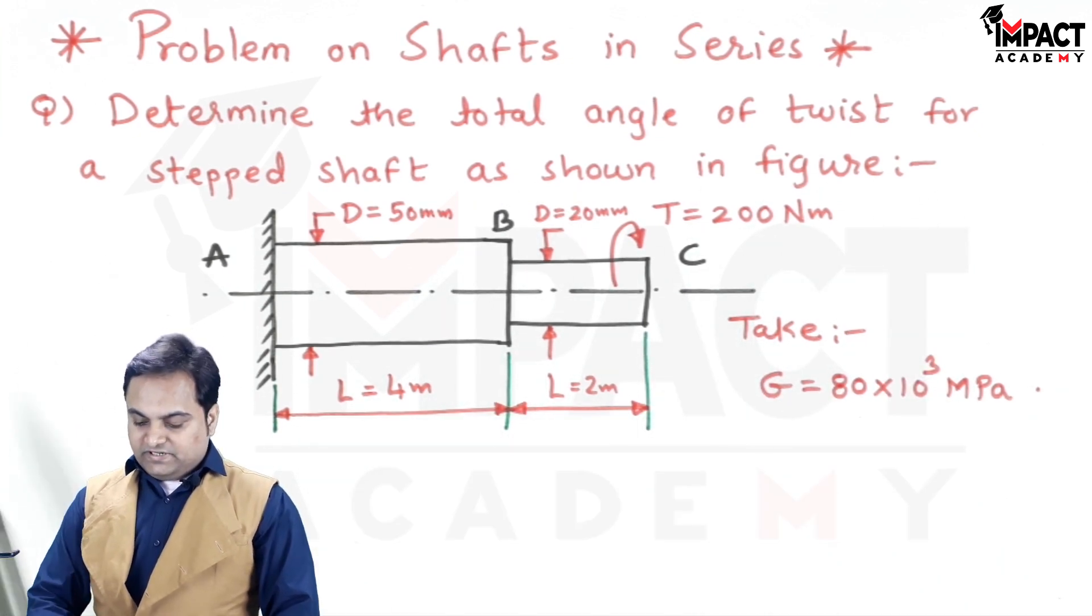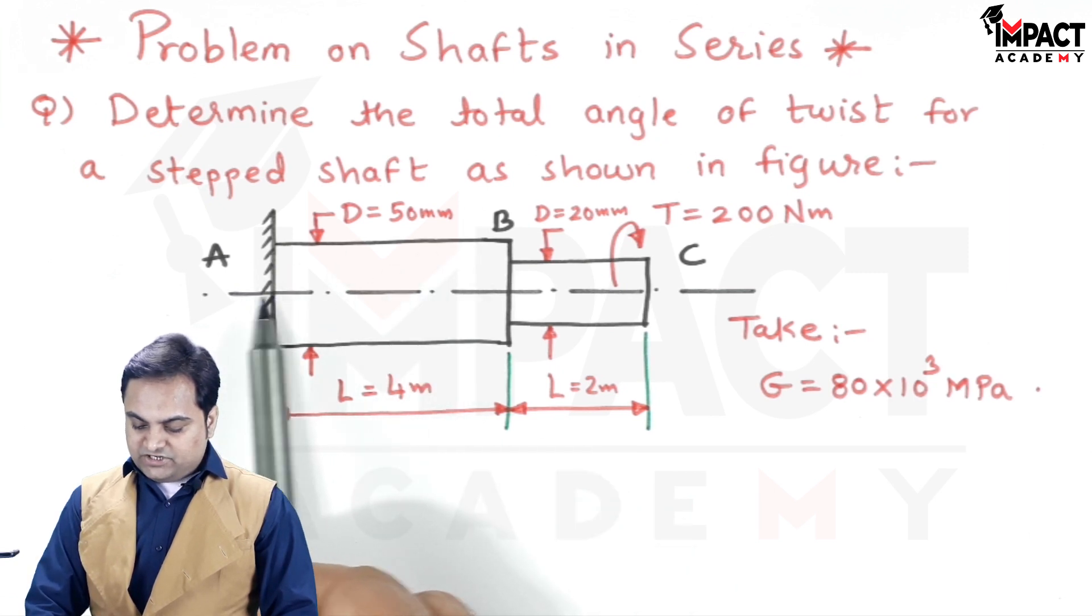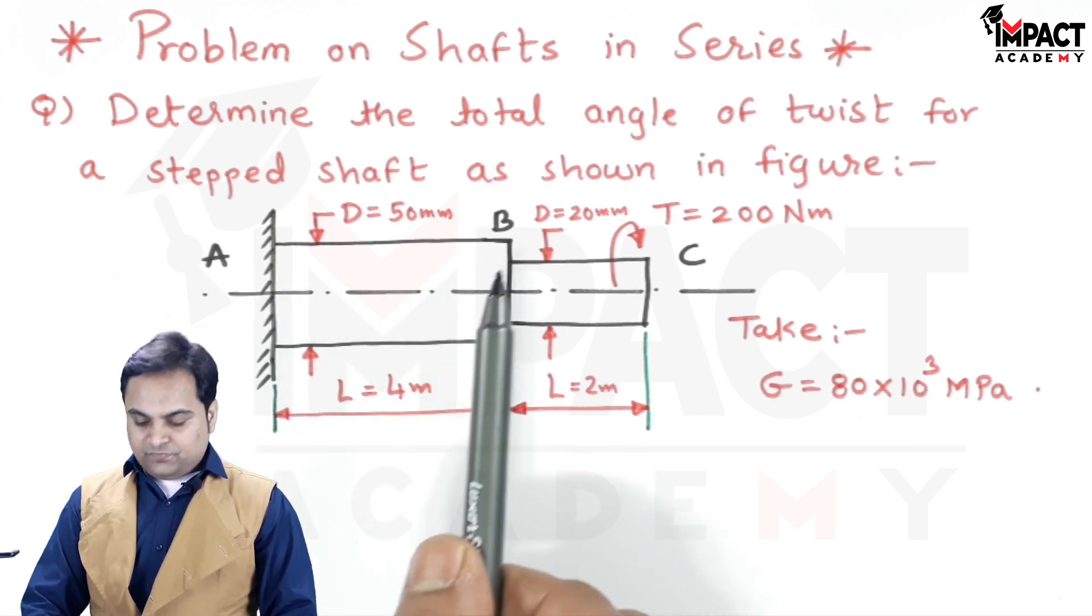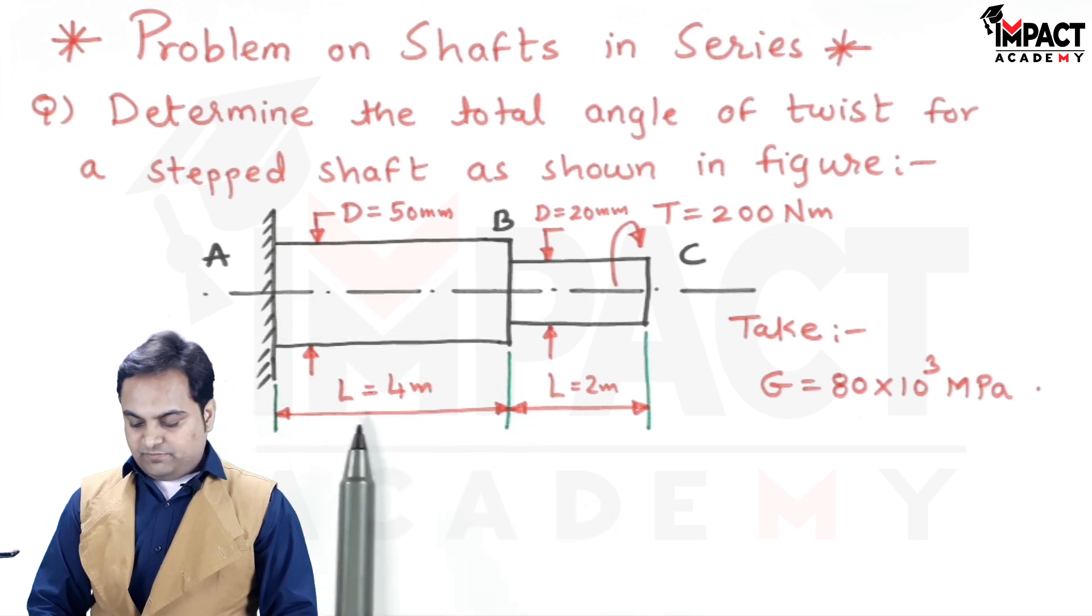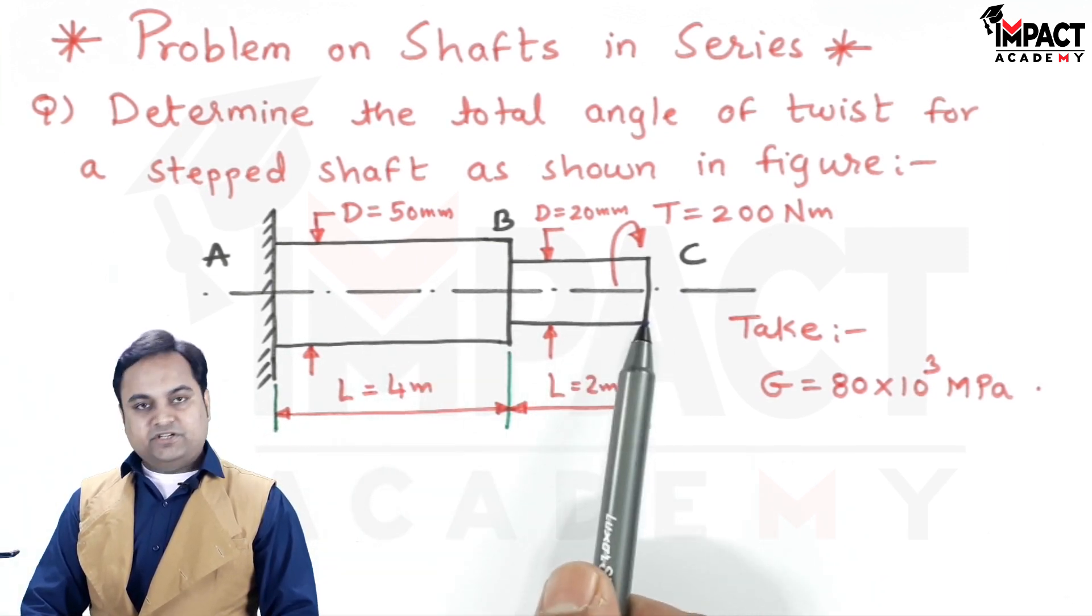The diagram is given. As we can see, there is a shaft having length AB with diameter D=50mm and length L=4m.